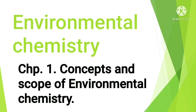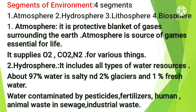Now we discuss the segments of the environment. The environment is made up of four segments: atmosphere, hydrosphere, lithosphere, and biosphere. The atmosphere is a protective blanket of gases surrounding the Earth. Different gases form this blanket, which sustains life on Earth and saves it from the hostilities of outer space. The atmosphere absorbs most of the cosmic rays from outer space and the high-energy portion of electromagnetic radiation from the Sun.